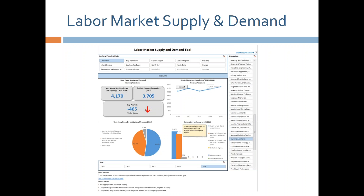Here is a screenshot of our tool, which currently still exists in Microsoft Excel. Users can filter based on their area with filter buttons above, and use occupational filters on the right to select an occupation. We compare average annual job openings to related program completers for selected occupations, and provide three additional charts that break down supply data so users can better understand credentials being earned by the incoming workforce supply.